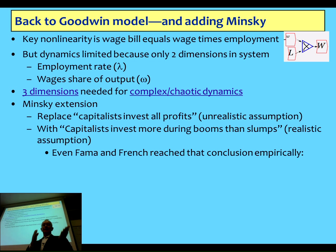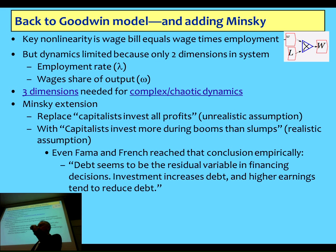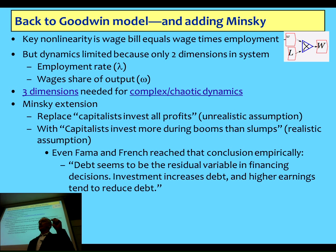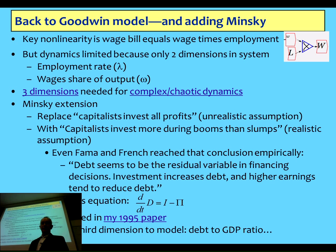This argument — that capitalists invest more during booms than slumps — was an empirical result found by Fama and French, two of the most conservative people in finance. In a working paper, they stated: 'Debt seems to be the residual variable in financing decisions. Investment increases debt, and higher earnings tend to reduce debt.' It's a differential equation: the rate of change of debt is investment minus profits. You just need an investment function that differs from the rate of profit, and you've got a third dimension in the Minsky model, which I used in my 1995 paper on financial instability.